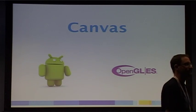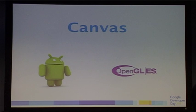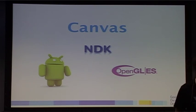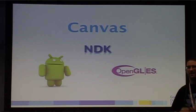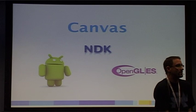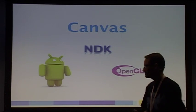We have RenderScript, new to Android, running on Honeycomb and above. And then the NDK. When you're thinking about doing your applications and you see all these different options for getting pixels to the screen, they use different amounts of memory and you need to provide different amounts of glue for each one. Which one should you be using?